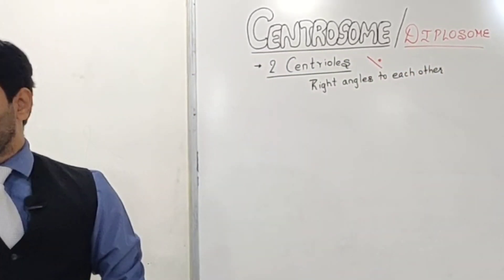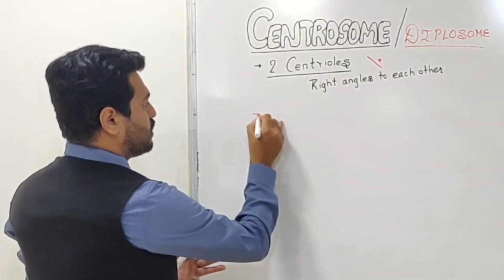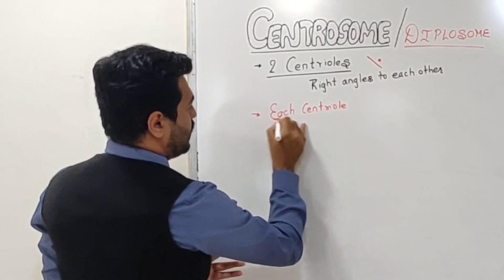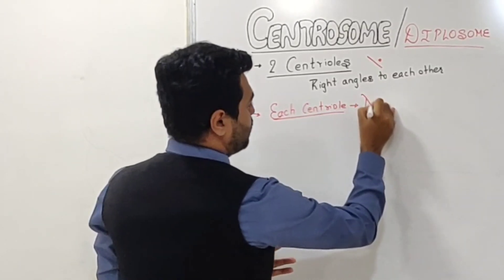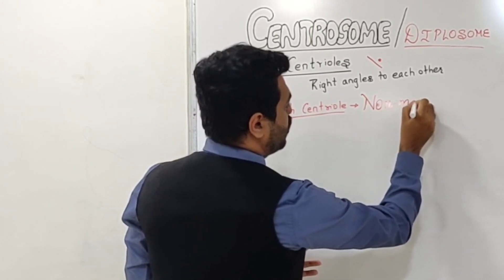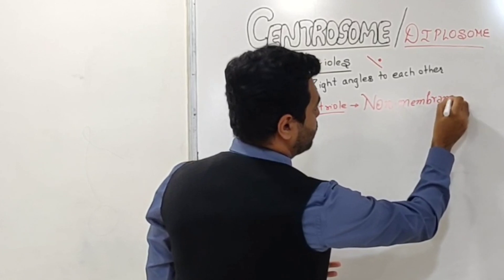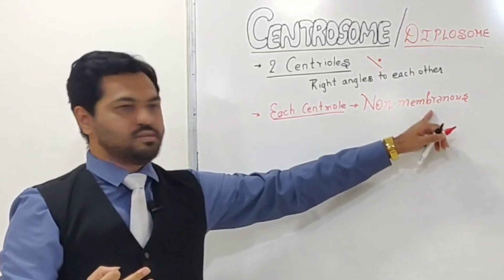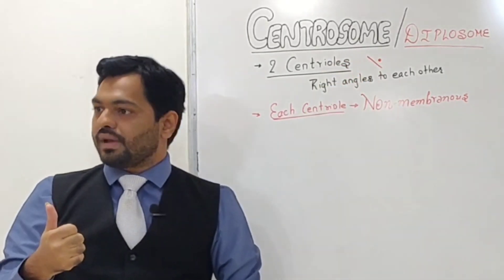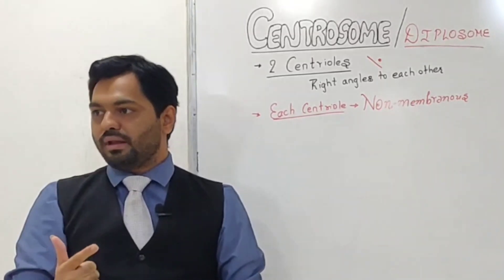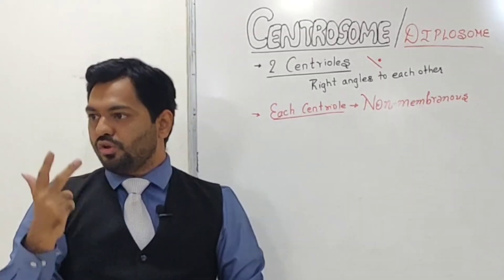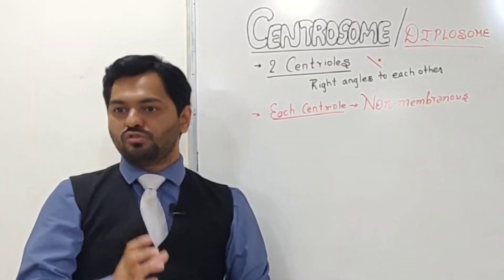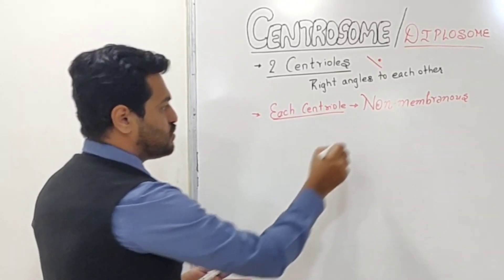An important point to remember for entrance exams: individual centrioles do not have a membrane, so we call them a non-membranous structure. In cell biology, three structures are specifically non-membranous: centrioles, ribosomes (which we studied earlier as non-membranous), and the nucleolus inside the nucleus, which is also non-membranous. All other cell organelles are membrane-bound.